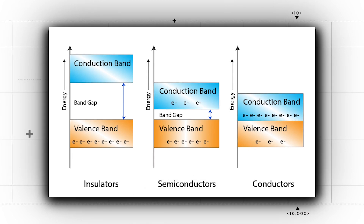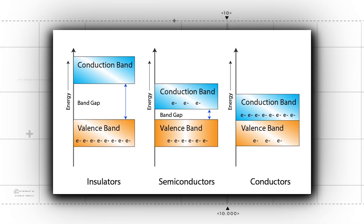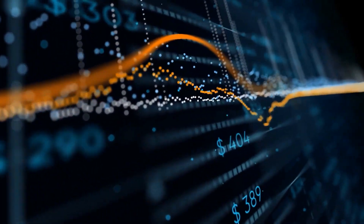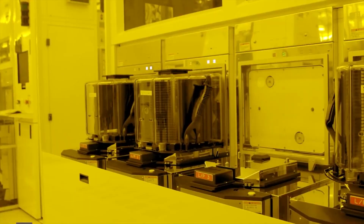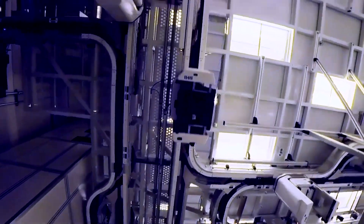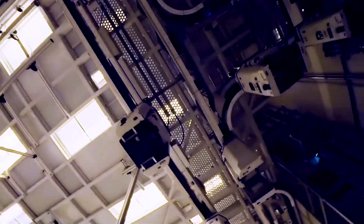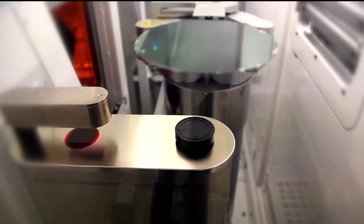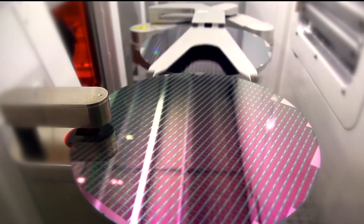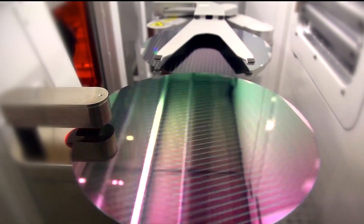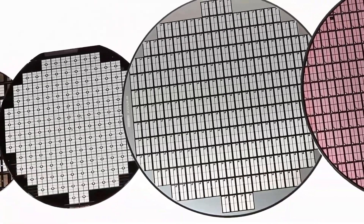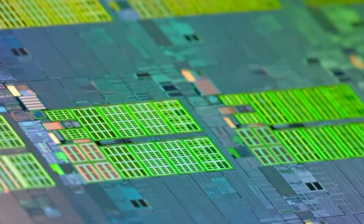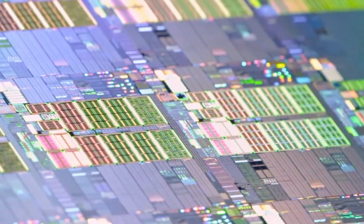The band gap is the energy required to move an electron from a lower energy state to a higher energy state. In insulators, the band gap is very large, meaning it takes a lot of energy to move an electron. In conductors, the band gap is very small, meaning it takes very little energy to move an electron. But in semiconductors, the band gap is just right — not too big and not too small. This means that semiconductors can be used to control the flow of electricity, which is why they are so useful in electronics.